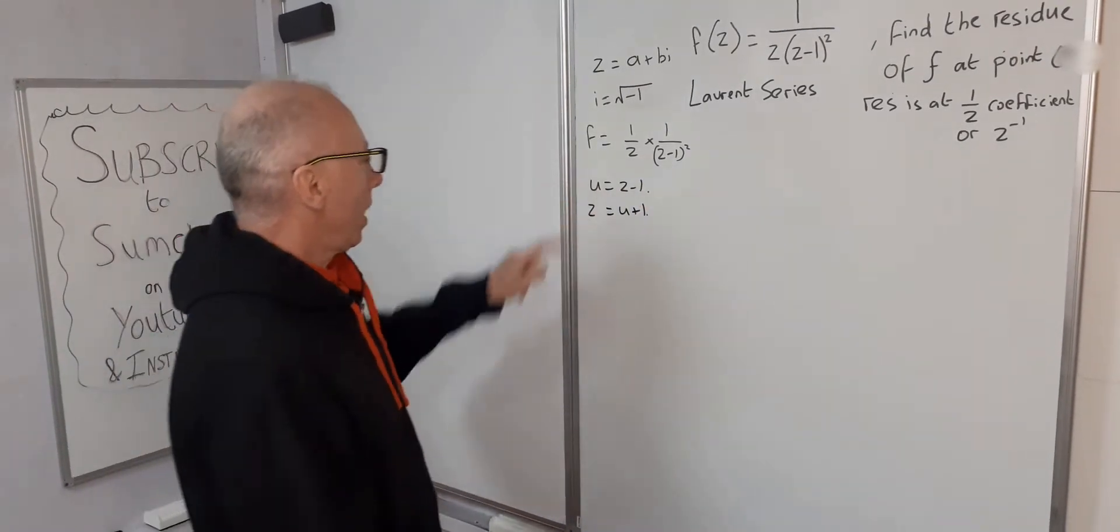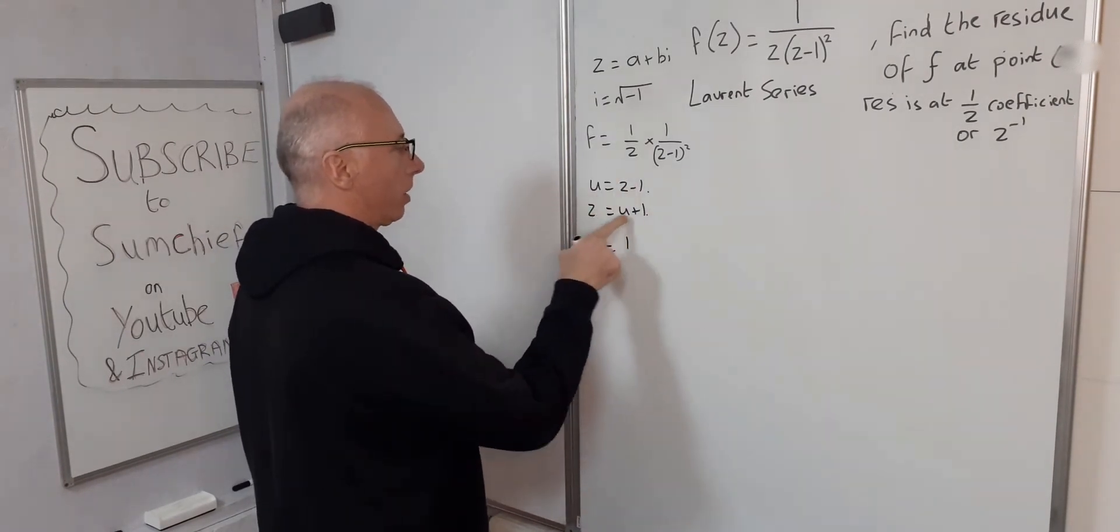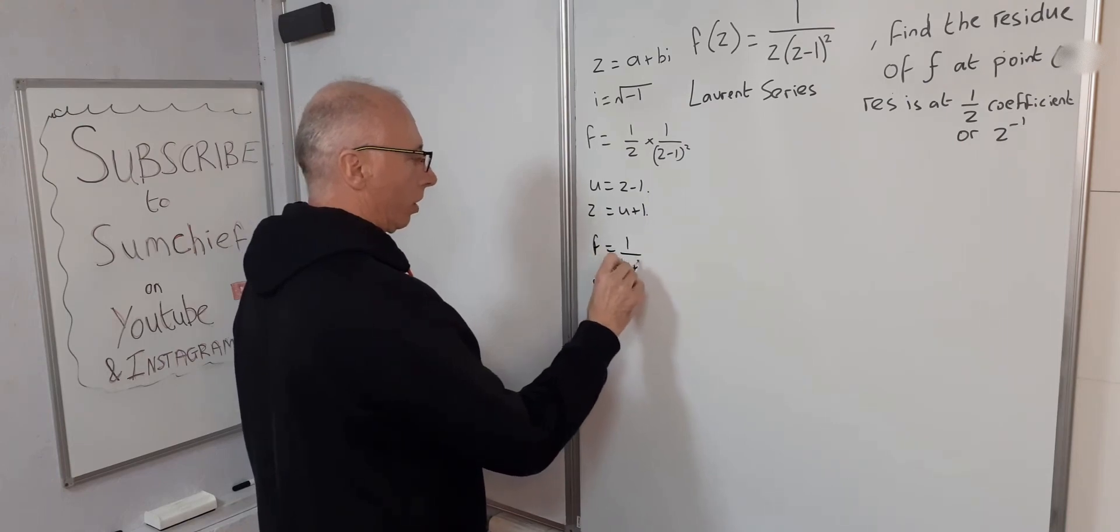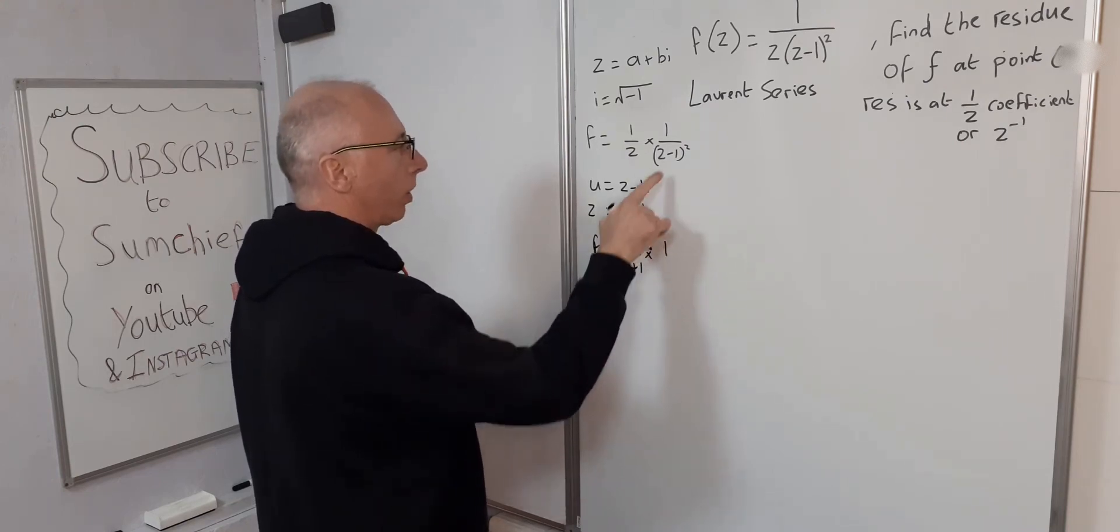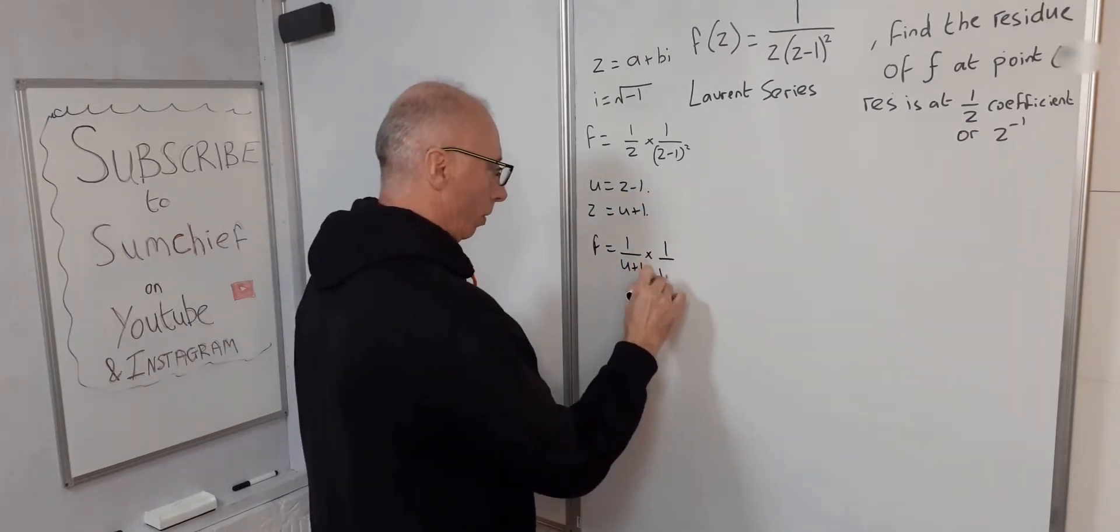So now we can write f in the u world as 1 over z is u plus 1, and then multiply by 1 over u squared. u is z minus 1, so 1 over u squared.